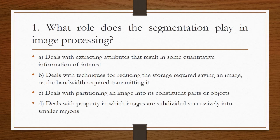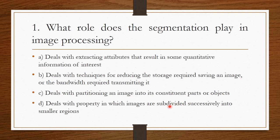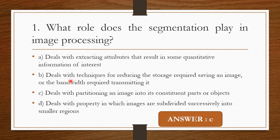Question 1: What role does segmentation play in image processing? Option A deals with extracting attributes that result in some quantitative information of interest. Option B deals with techniques for reducing storage required for saving an image or bandwidth required for transmitting it. Option C deals with partitioning an image into its constituent parts or objects. Option D deals with property in which images are subdivided successively into smaller regions. The correct answer is Option C — segmentation deals with partitioning an image into its constituent parts or objects.